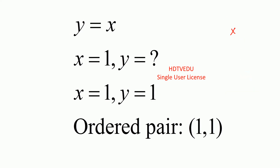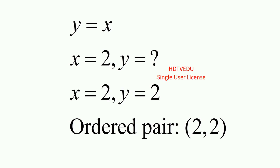What happens when we choose x equals 1? y is given by y is equal to x. We know x is equal to 1, so y is equal to 1. Our ordered pair is 1, 1. What happens when we choose x equals 2? y is equal to x, so y is 2. Our ordered pair is 2, 2.